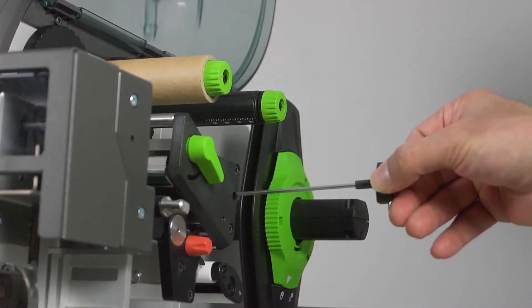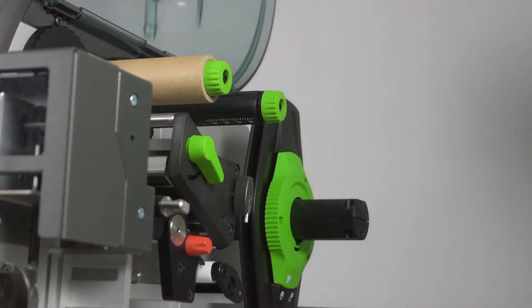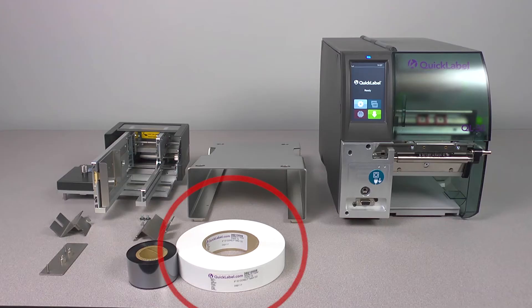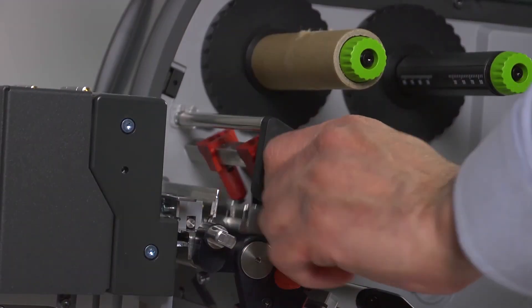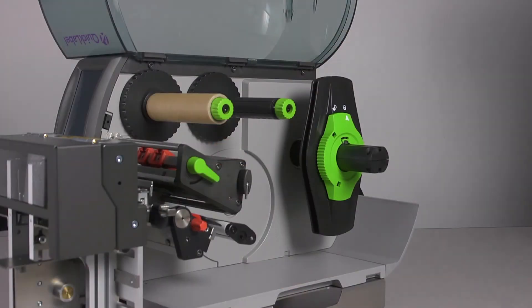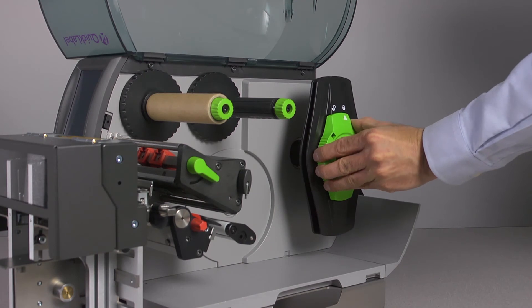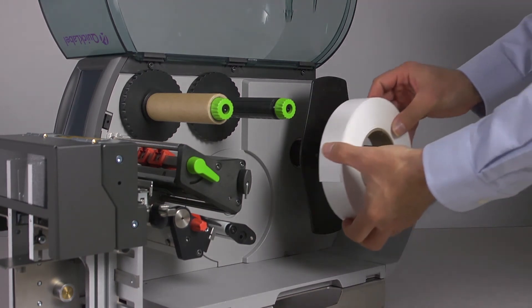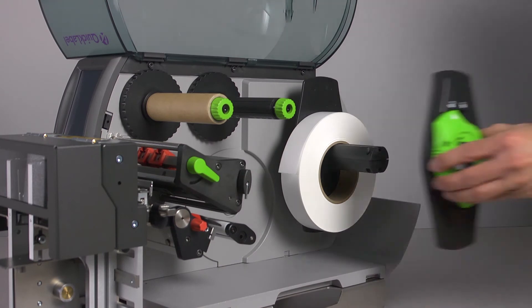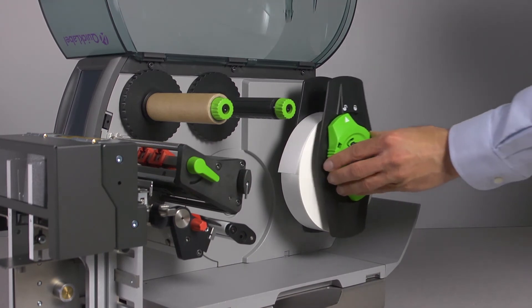The Allen key can now be placed back inside the printer. Now install your roll of material onto the roll holder. Lift the printhead. Unlock and remove the margin stop, also called the outer flange. Load the roll of material onto the roll holder and then insert and lock the margin stop or outer flange.